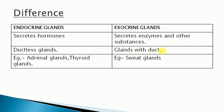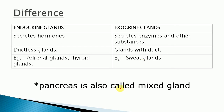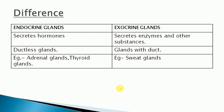Examples of endocrine glands include the adrenal gland and thyroid gland, while examples of exocrine glands include sweat glands. The pancreas is also called a mixed gland because it functions as both an endocrine and an exocrine gland. This concludes our study of the pancreas, the hormones secreted from it, and their functions.